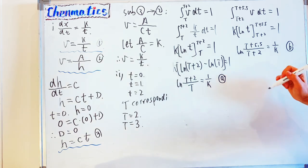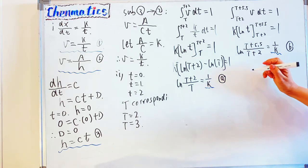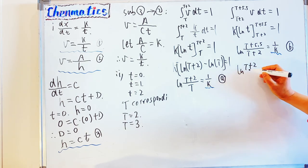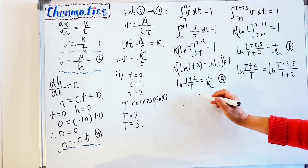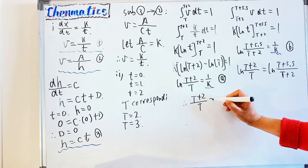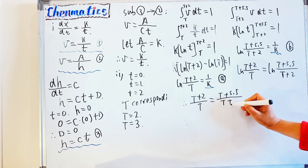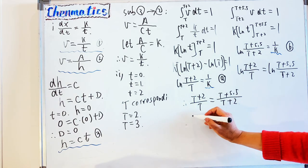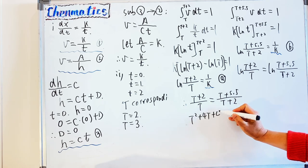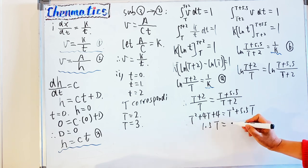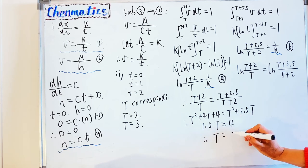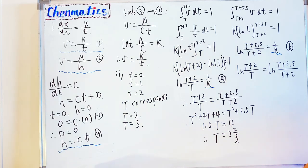Since both equation A and equation B equal 1/k, we equate them: log((T+2)/T) equals log((T+5.5)/(T+2)). Since the log values are equal, the arguments are equal: (T+2)/T equals (T+5.5)/(T+2). Cross-multiplying gives T² + 4T + 4 equals T² + 5.5T, which simplifies to 1.5T equals 4, therefore T equals 2 and two-thirds.